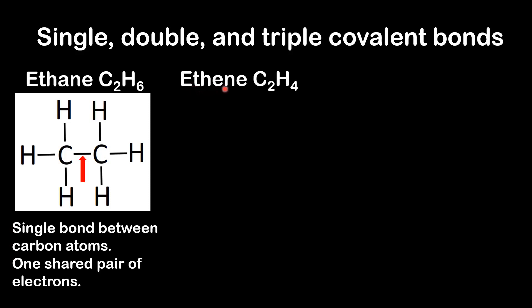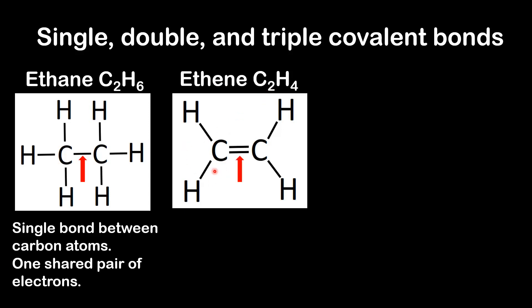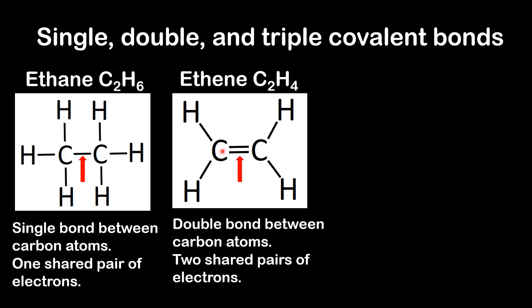Next we look at ethane. The molecular formula is C₂H₄ and this is the structural formula. The two black lines between the carbon atoms represent a double bond. A double bond is composed of two shared pairs of electrons.